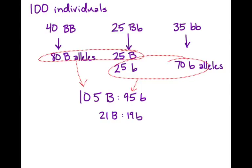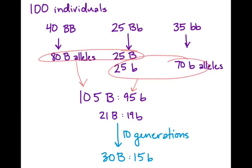A change in allele frequency is microevolution — meaning this frequency is changing over time. With mutations arising and natural random variation, you're going to see changes in allele frequencies. So maybe in the future, after 10 generations, there are more dominant B alleles and the frequency shifts from 21:19 to something like 30:15. One of many factors that can change allele frequencies is natural selection, and that's what we're going to focus on from here on out.